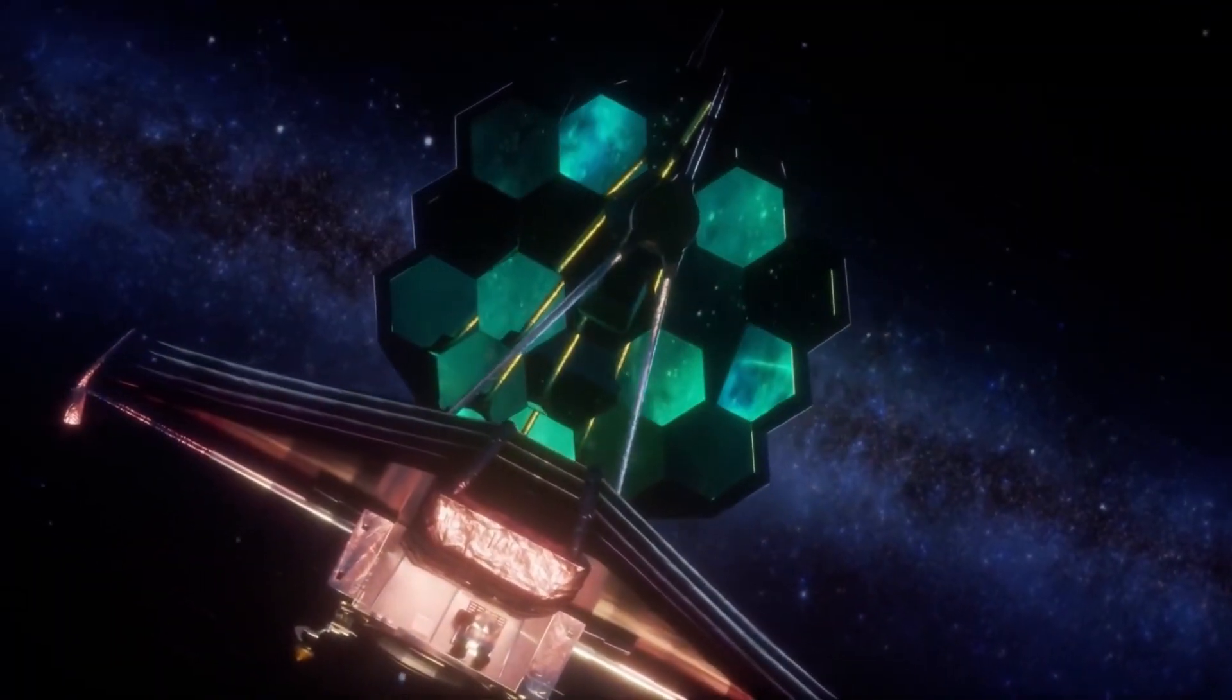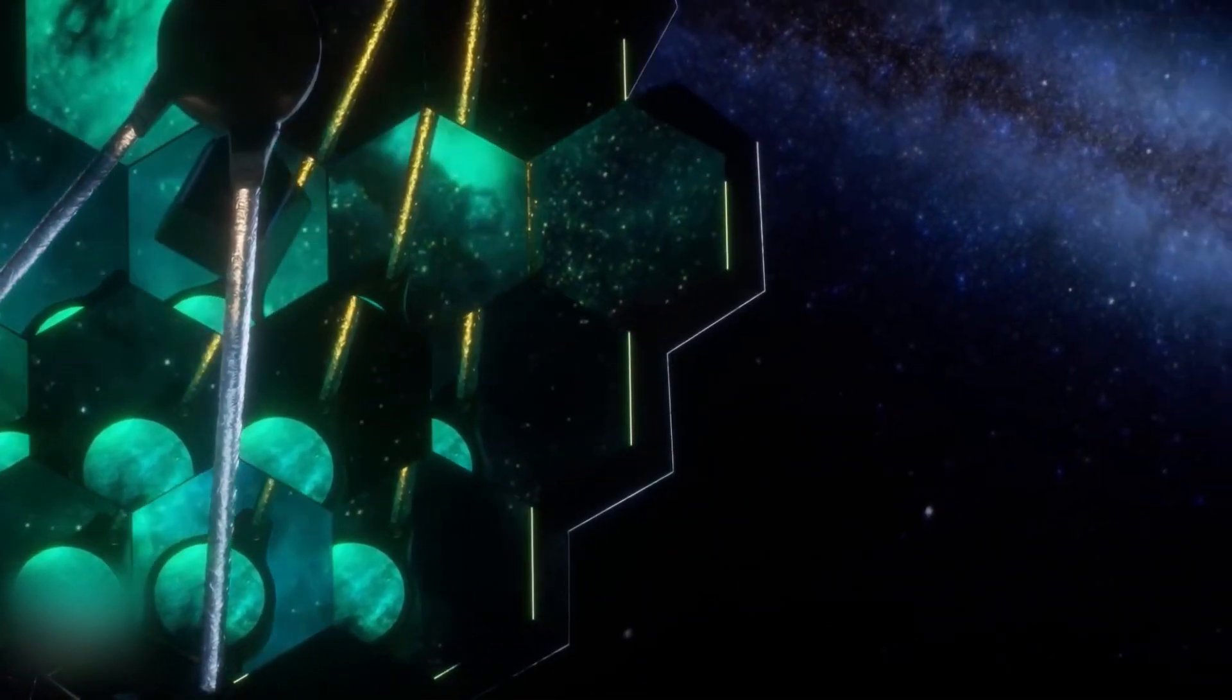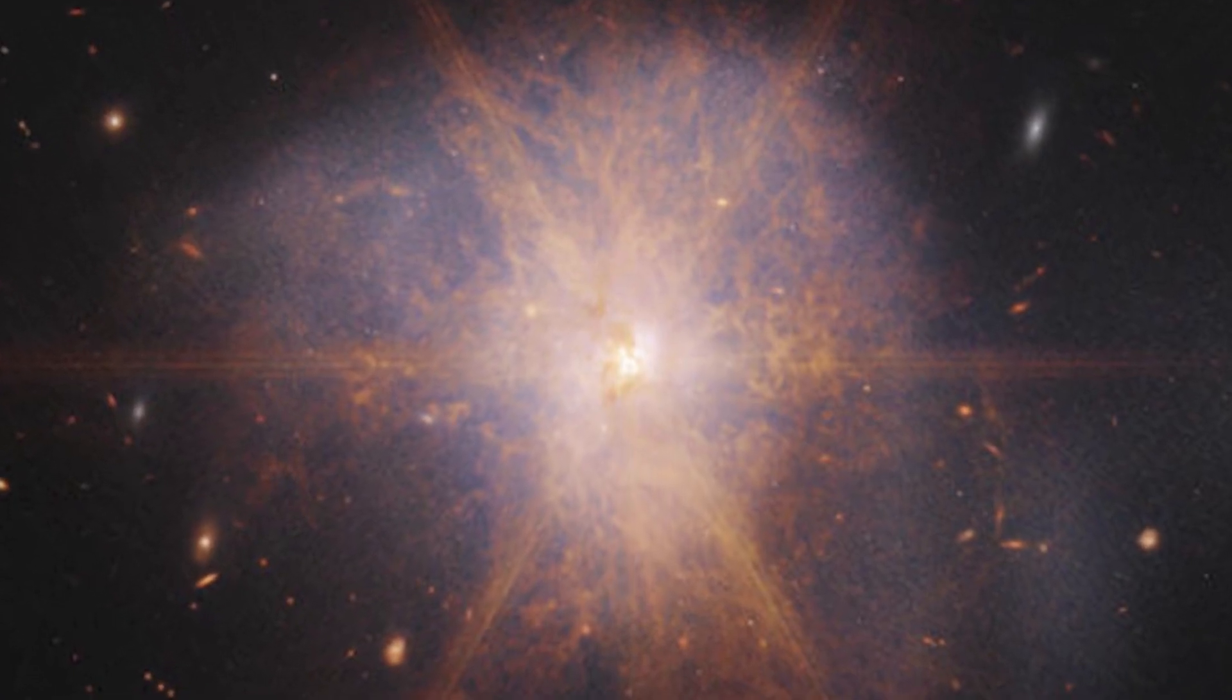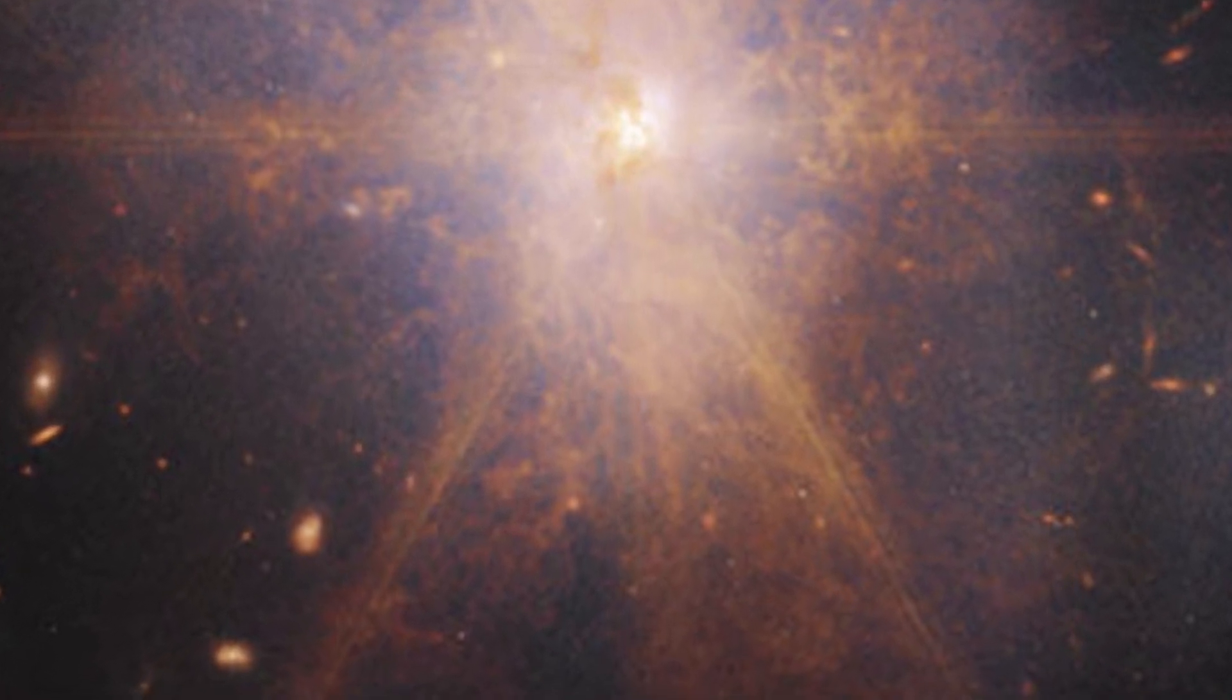This latest view from the James Webb Space Telescope shows an impressive galactic merger of the two galaxies. This image also shows faint tidal tails extending from the outskirts of the merger, indicating the gravitational pull between the two galaxies. Finally, the reddish and orange streams and filaments represent scattered organic materials in ARP 220.